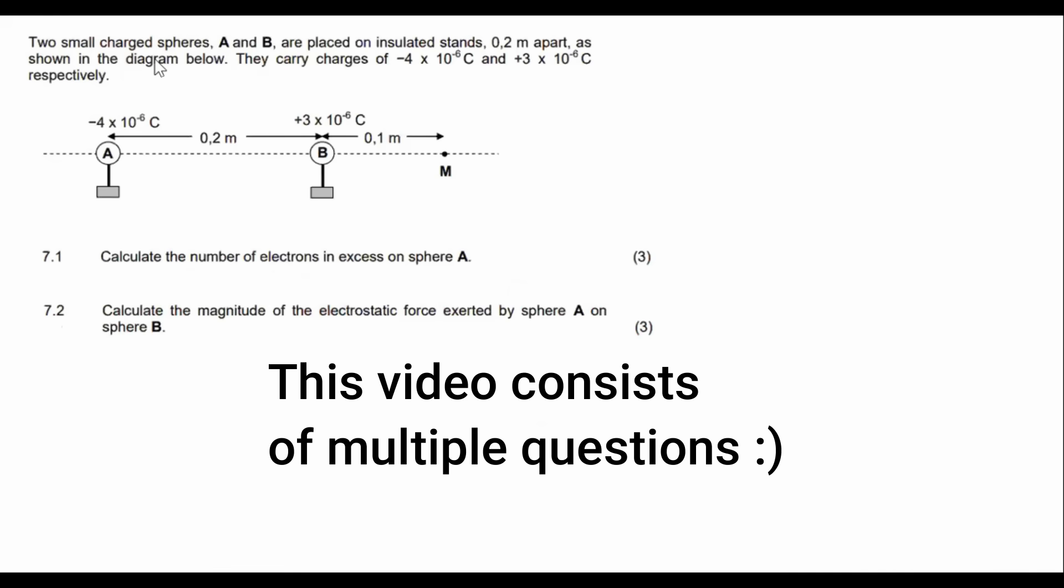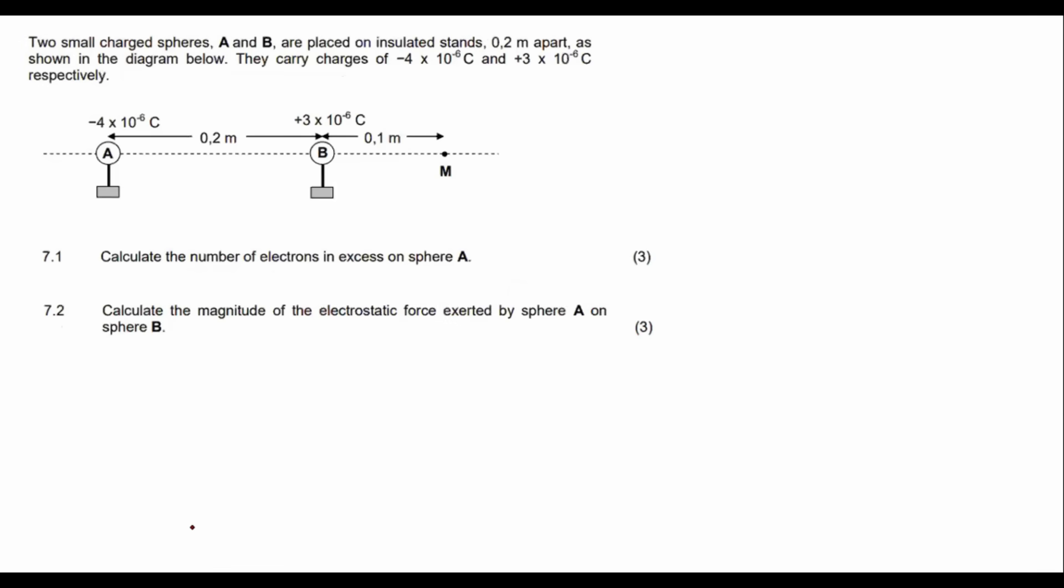Electrostatics. So in electrostatics, the main formulas that we use, it's actually a very easy section. The main formulas that we use, I should have put the formulas here, but it's usually F equals KQ1Q2 over r squared. E equals KQ over r squared. E equals F over small q.